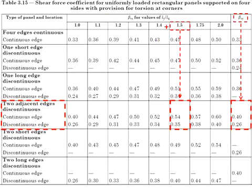It was given that ly per lx is equal to 1.5. Then, the beta for v_x will be equal to 0.54 and 0.35, and beta for v_y will be equal to 0.4 and 0.26.